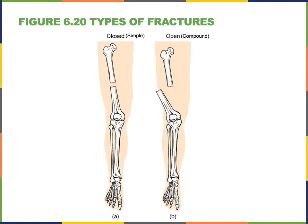A fracture in which the skin remains intact is known as a closed or simple fracture. In contrast, an open or compound fracture is when an end of a bone tears through the skin, which carries a high risk of infection. It is very important to ensure that the bones are reset so they can heal properly and that wounds are cleaned thoroughly and closed to prevent infection.